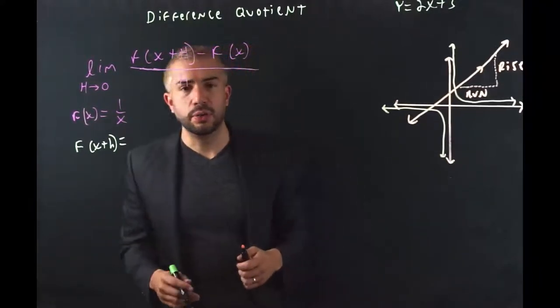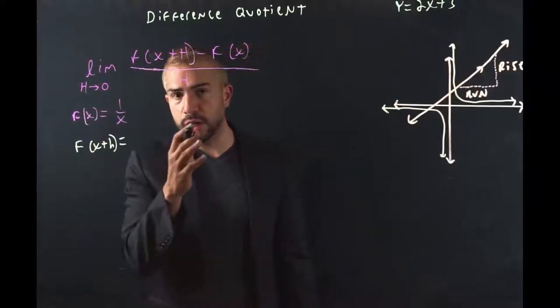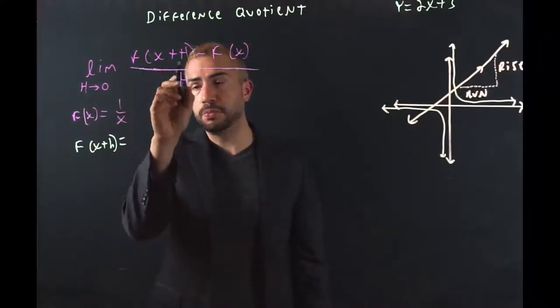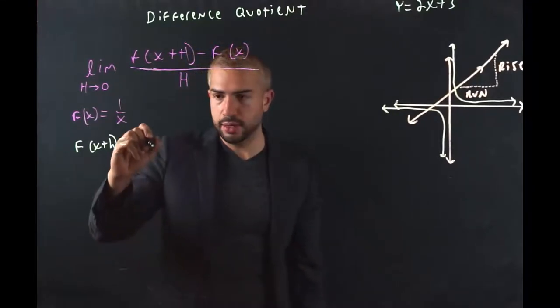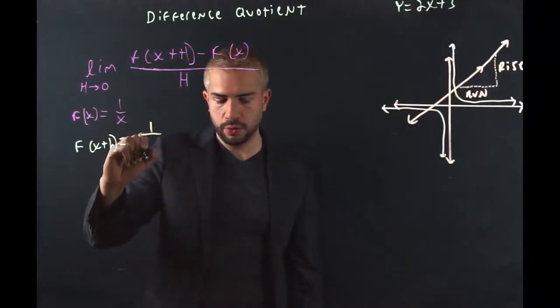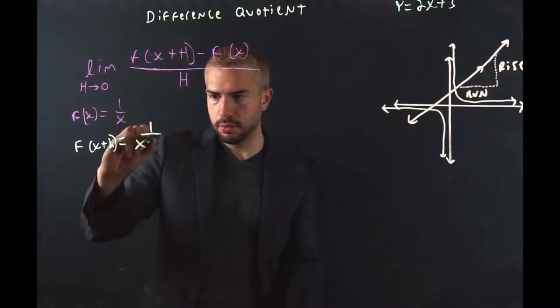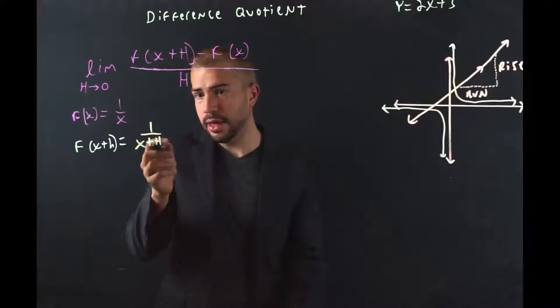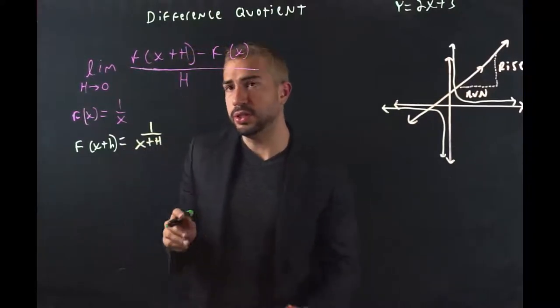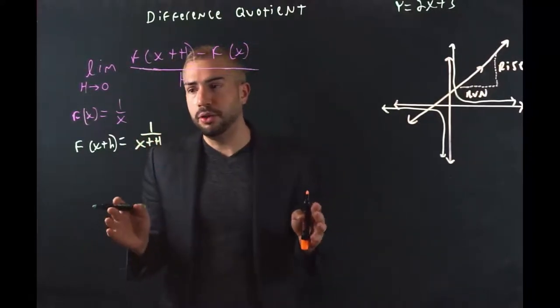Now let's find out the rate of change. I recommend first finding out what is f(x + h). In this case, f(x + h), we know that it will be 1 over (x + h). We substitute that in. Now that we know what f(x + h) is, we just plug everything back in.